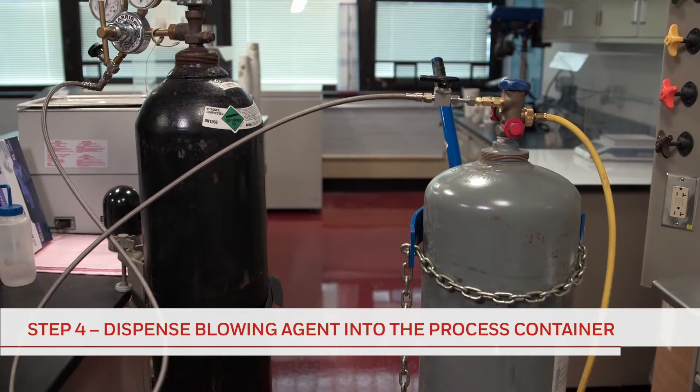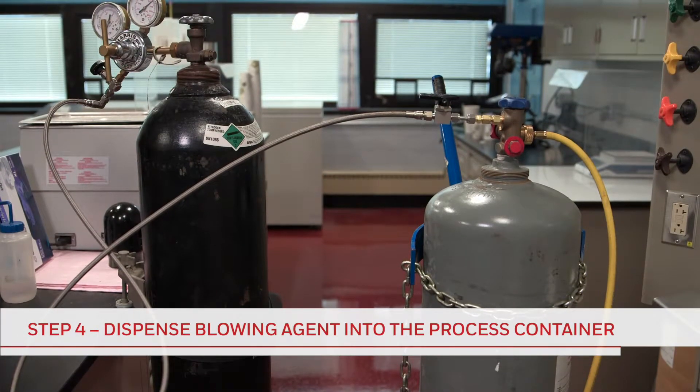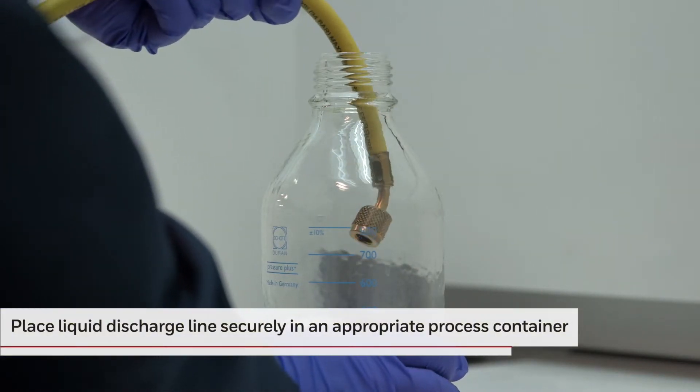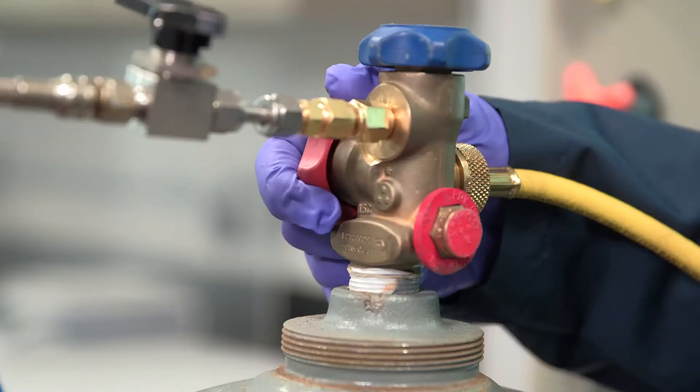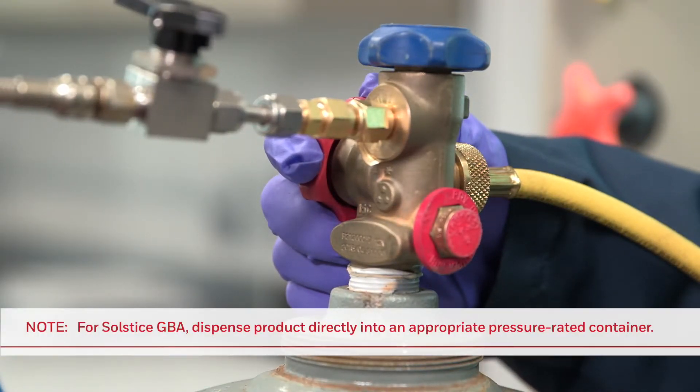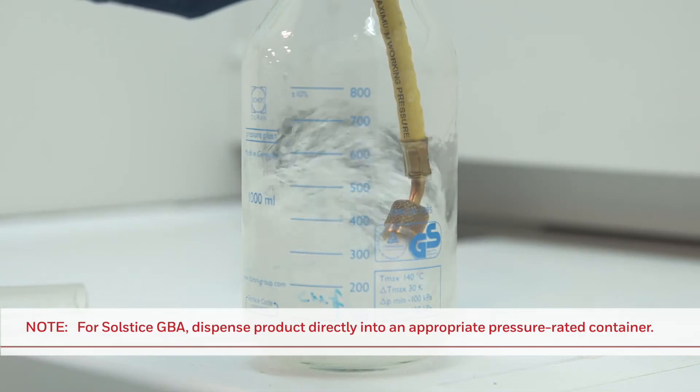With the blowing agent cylinder now pressurized with nitrogen, you're ready for the final stage in the process. First, check that the liquid discharge line is securely placed in an appropriate process container. You can now open the liquid valve of the blowing agent cylinder to dispense the blowing agent into the process container. The blowing agent will be dispensed as a liquid.